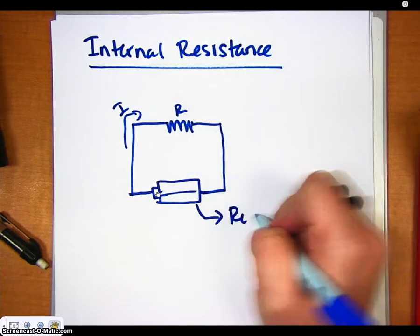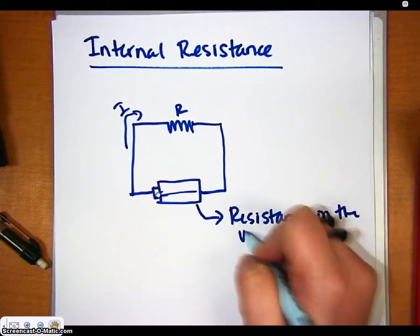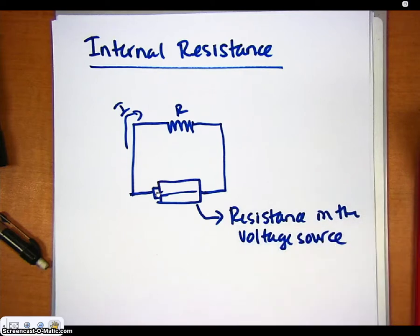So internal resistance is resistance in the voltage source. An example of this is, let's say,